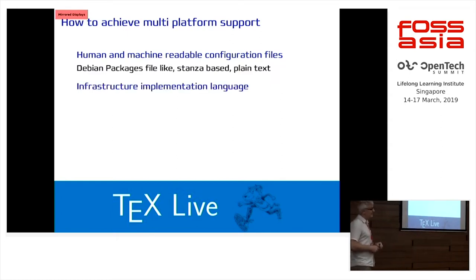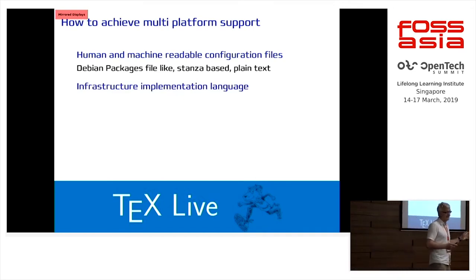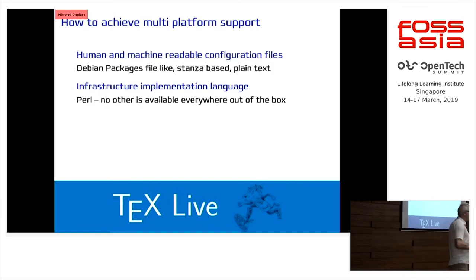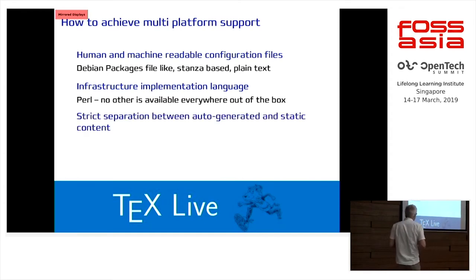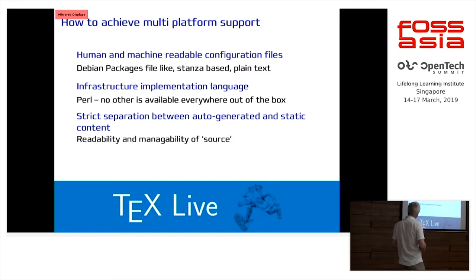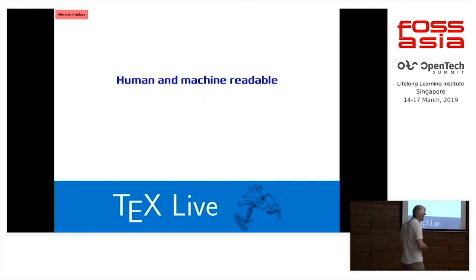What we use is a Debian packages file format — like a paragraph. You have stanzas describing a package. It's a line-based plain text file. Then the infrastructure implementation language — what do you guess? Have you seen the architectures I mentioned? There is only one: Perl. There is no other language available on all the platforms we mentioned. And then there's one step we learned: you need a strict separation between static stuff that we provide and auto-generated stuff. This allows for manageability of the source, otherwise everything explodes.